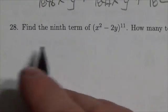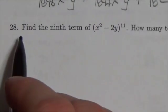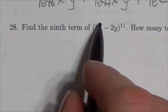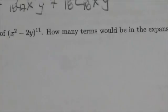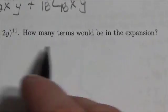Hi, everyone. So here's again another binomial expansion question. We're asked to find the ninth term of x squared minus 2y to the 11, and how many terms would there be in the expansion?